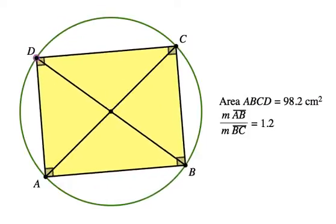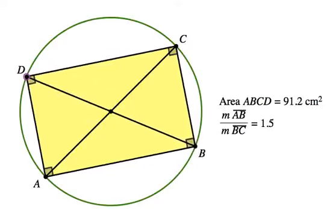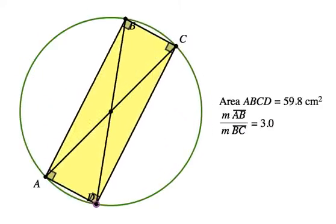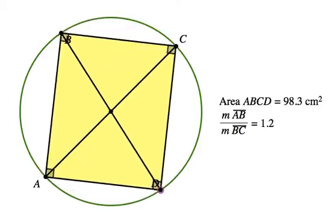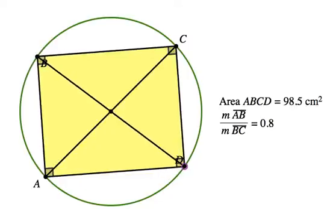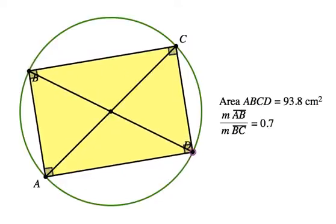And what happened when the area is 100? Well, the ratio of the sides, here it comes, ratio of the sides is 1. So when you have a square, you've got the biggest area.